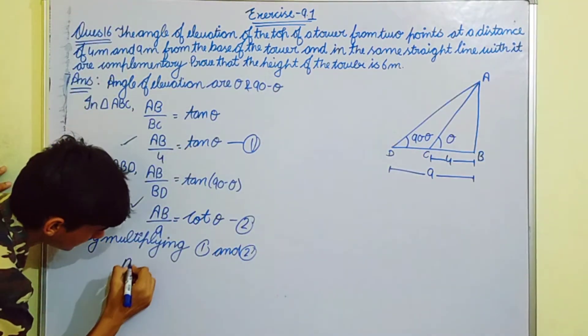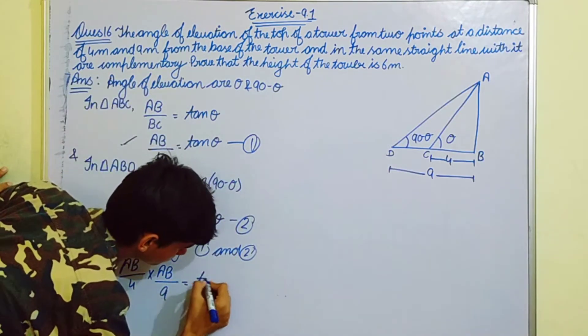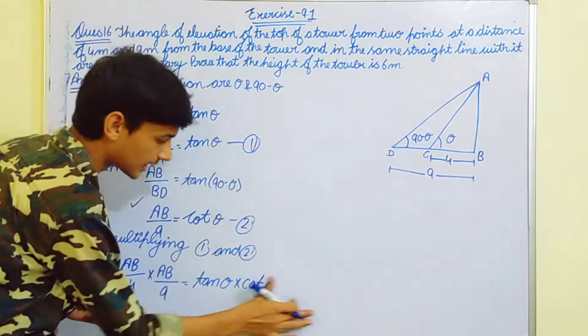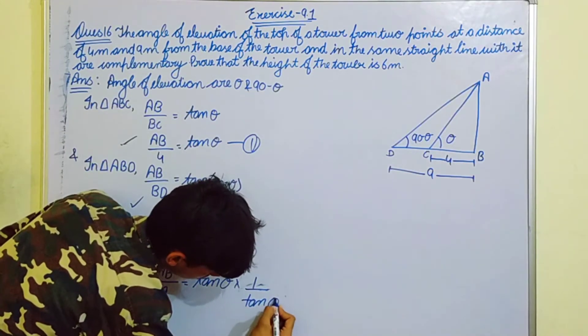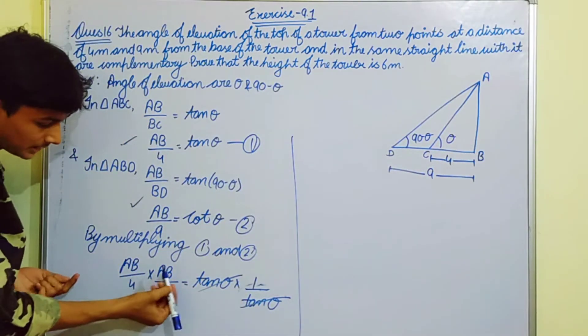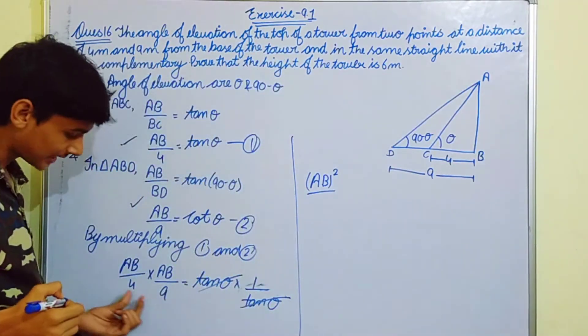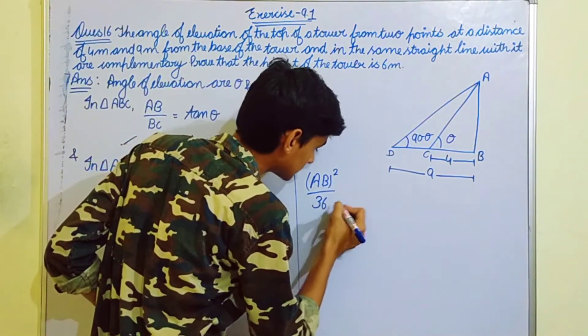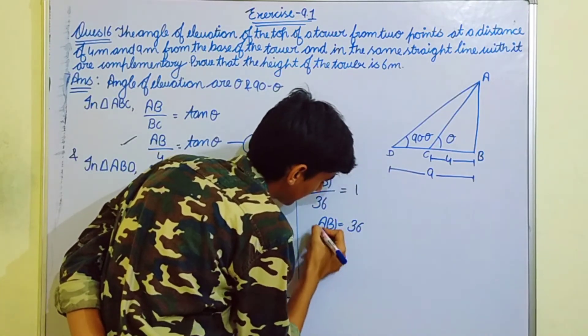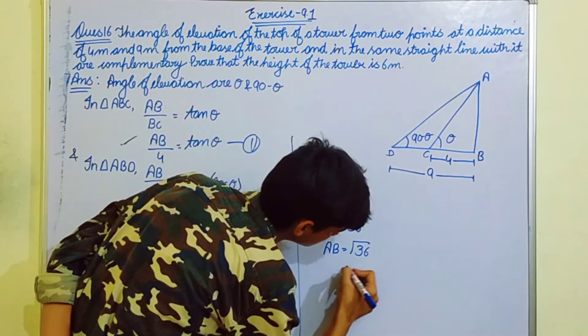Multiply LHS with LHS: AB by 4 into AB by 9 equals tan theta into cot theta. Cot theta can be written as 1 by tan theta. Tan cancels, leaving 1. AB multiply AB gives AB square. By 9 times 4 is 36. So AB square equals 36. Square root of 36 equals 6 meter.